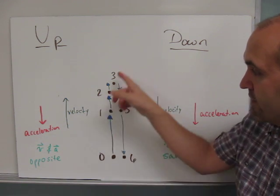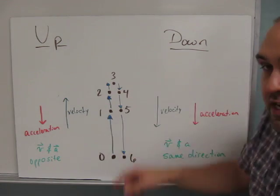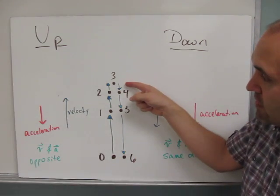We have seven positions here. So it starts down here, gets slower. The blue velocity vectors are getting smaller and smaller as we go up. And as we go down, the blue velocity vectors are getting bigger.